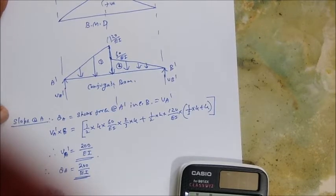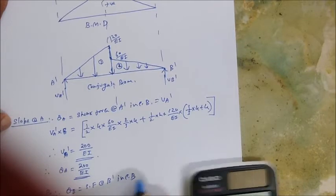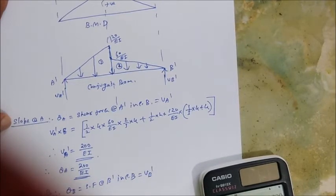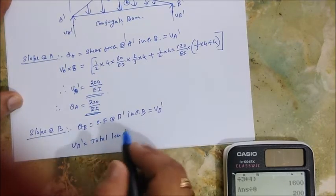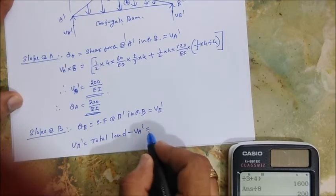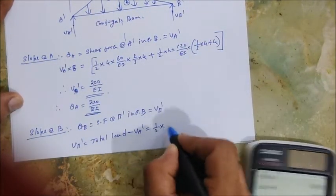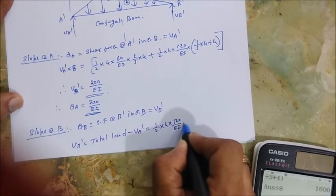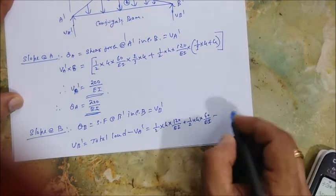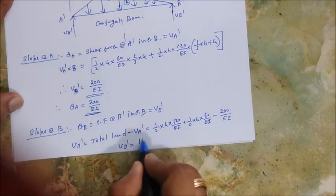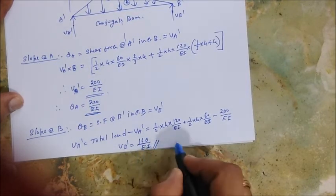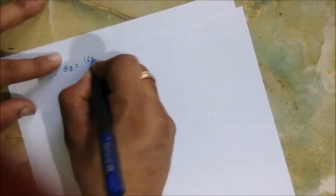Now the slope at B: theta B is equal to the shear force at B dash in the conjugate beam, which is VB dash. We can use a shortcut here — VB dash equals total load minus VA dash. The total load is the area of both regions: half into base into height for each. This gives VB dash equal to 160 by EI. Therefore theta B equals 160 by EI.